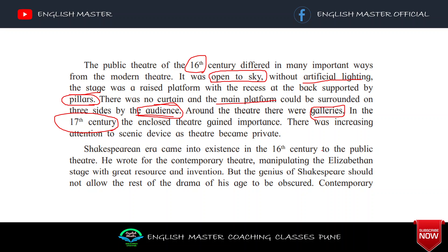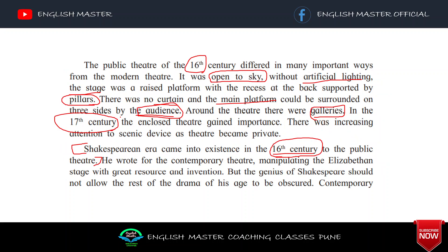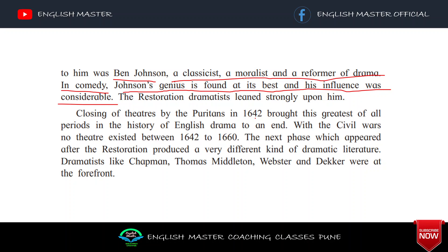The Shakespearean era came into existence in the 16th century. He wrote for the contemporary theatre, manipulating the Elizabethan stage with great resource and invention. But the genius of Shakespeare should not obscure the rest of the drama of his age. Contemporary with him was Ben Jonson — a classicist, moralist, and reformer of drama. In comedy, Jonson's genius is found at its best, and his influence was considerable.